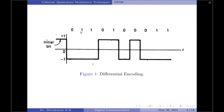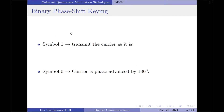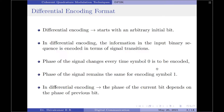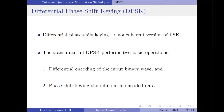What is also most important to note is that in differential encoding, the phase of the current bit depends upon the phase of the previous bit. For example, since we are encoding symbol 1 and there is not to be any change in the phase of the current transmitted signal, it should be known what is the phase of the previous bit. That is why the phase of the transmitted signal for the current bit depends upon the phase of the transmitted signal during the previous bit duration. Coming to the second operation in the DPSK system, we have Binary Phase Shift Keying. In BPSK, to transmit symbol 1 we transmit the carrier as it is, whereas to transmit symbol 0 the carrier is phase advanced by 180 degrees.